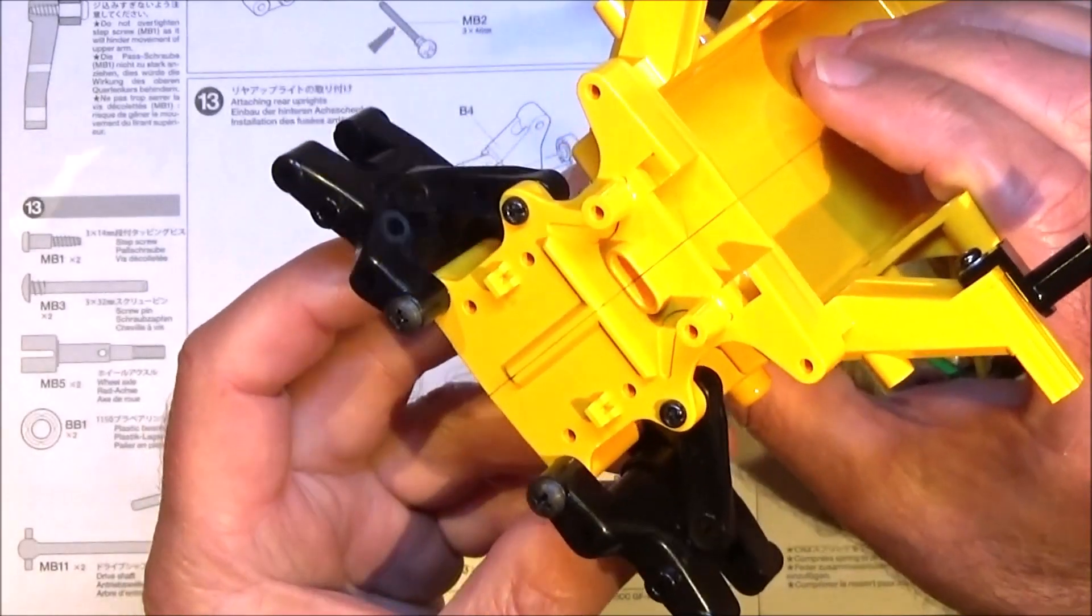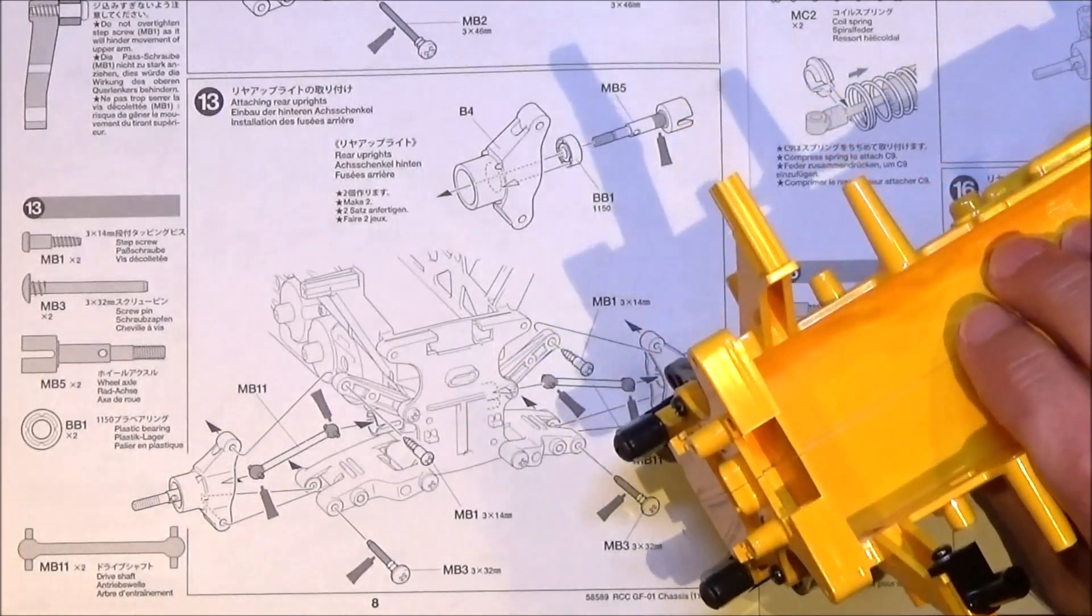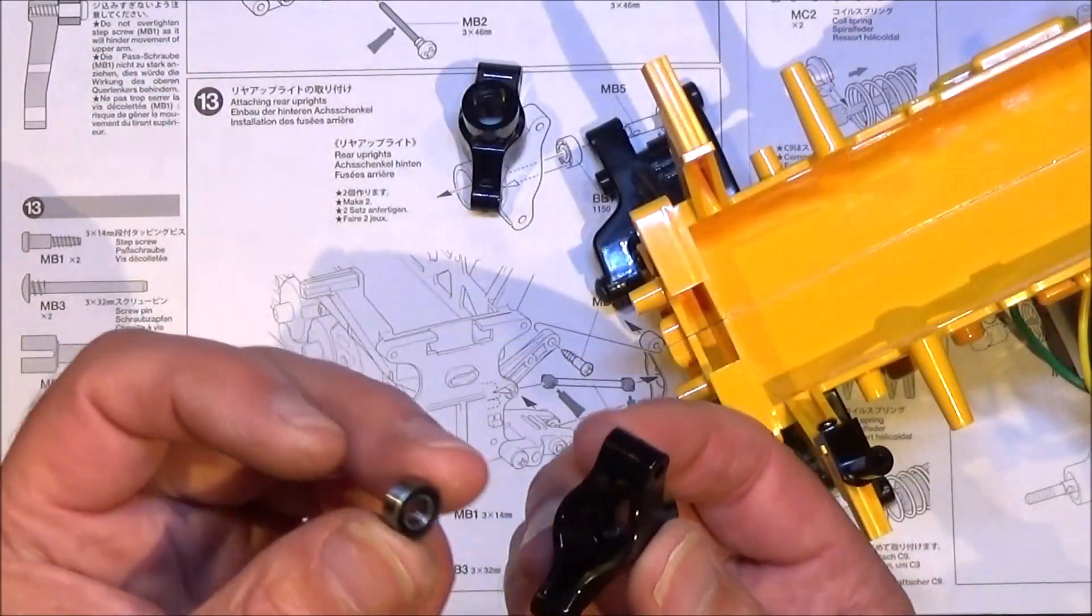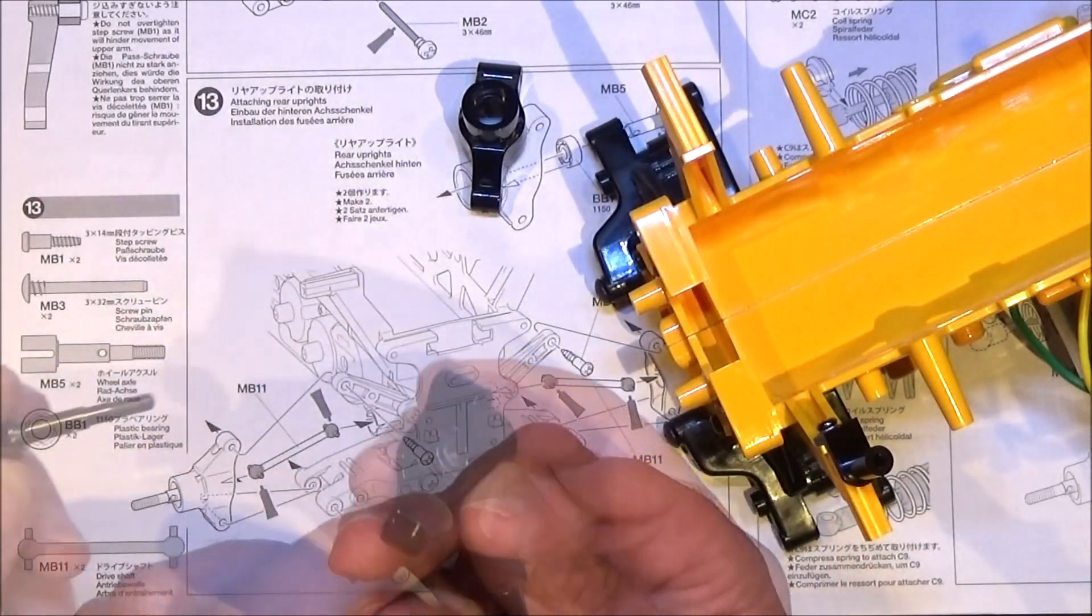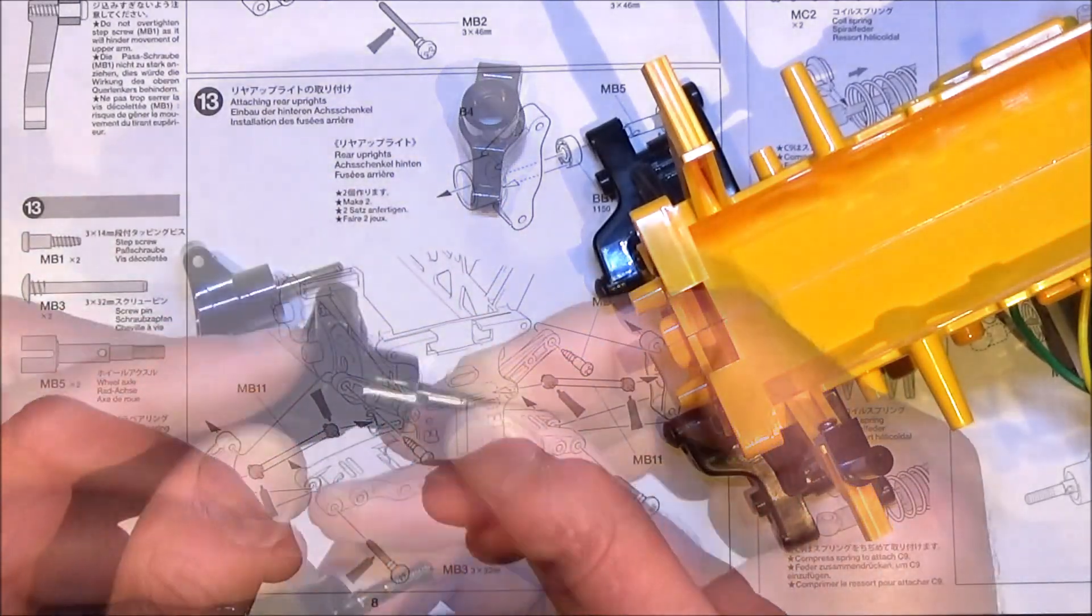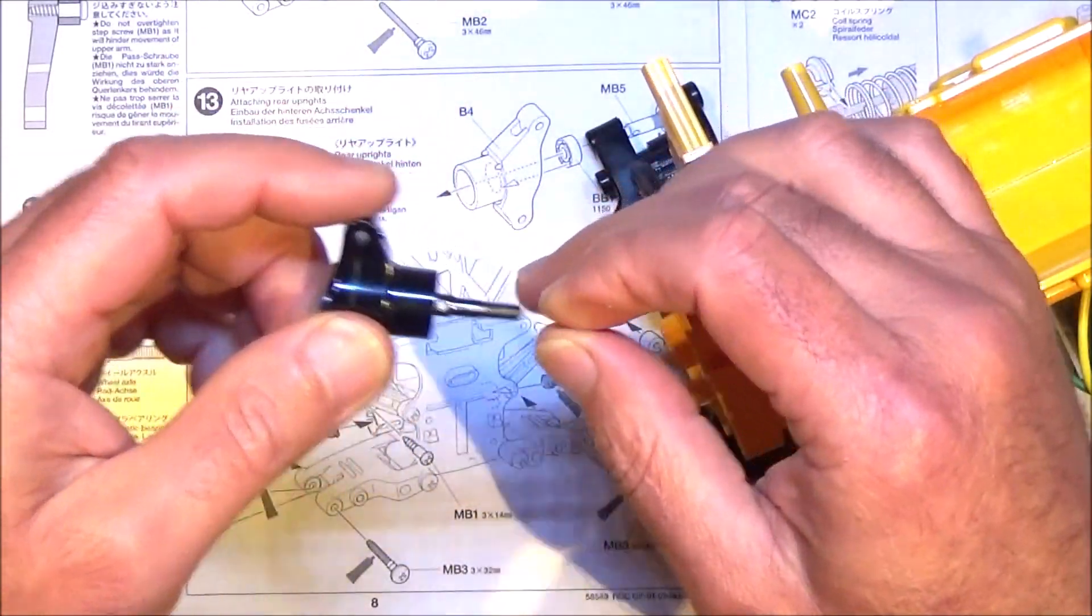On to step 13 which is attaching the rear uprights, which are these parts B4. Again you need to fit in your 1150 bearings into the inside of each one and then push in your wheel axle.